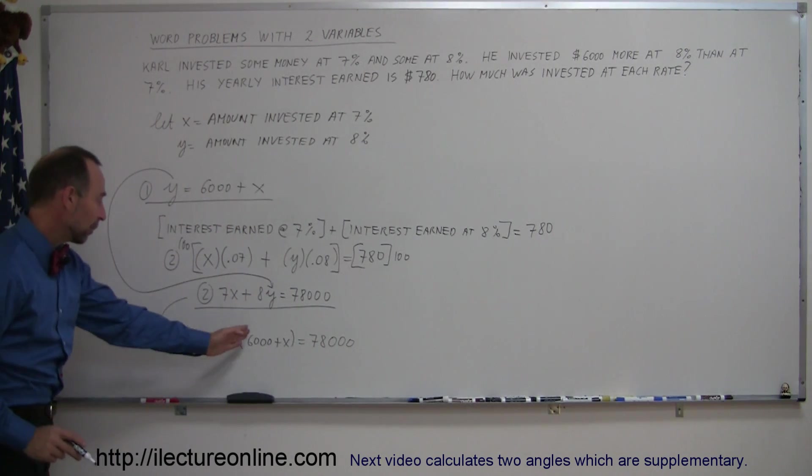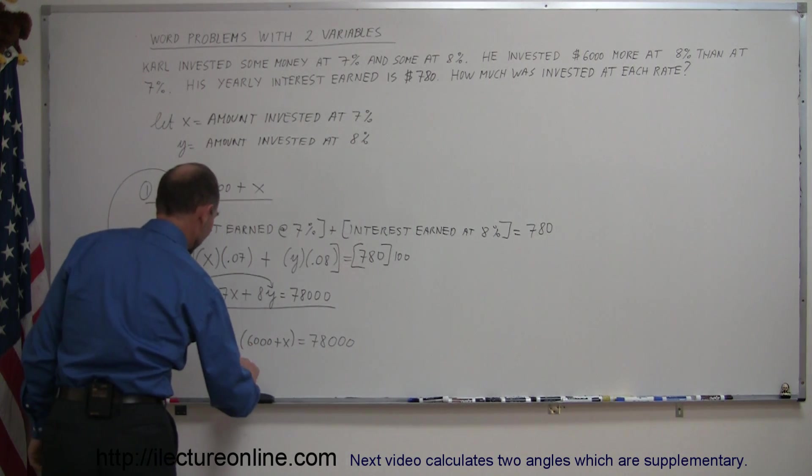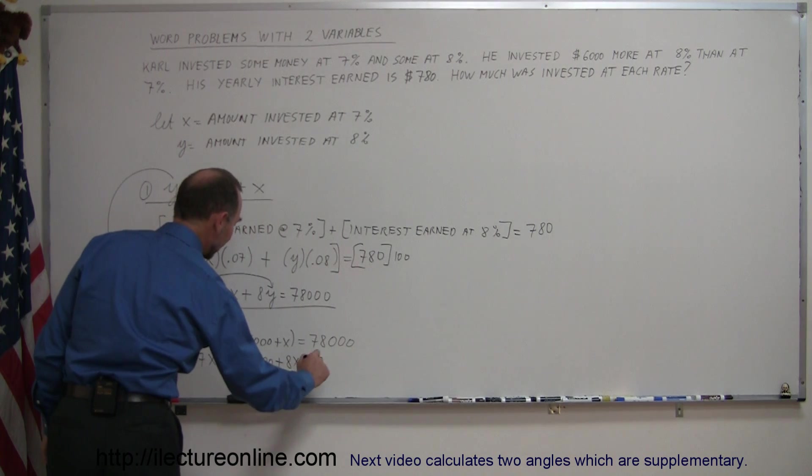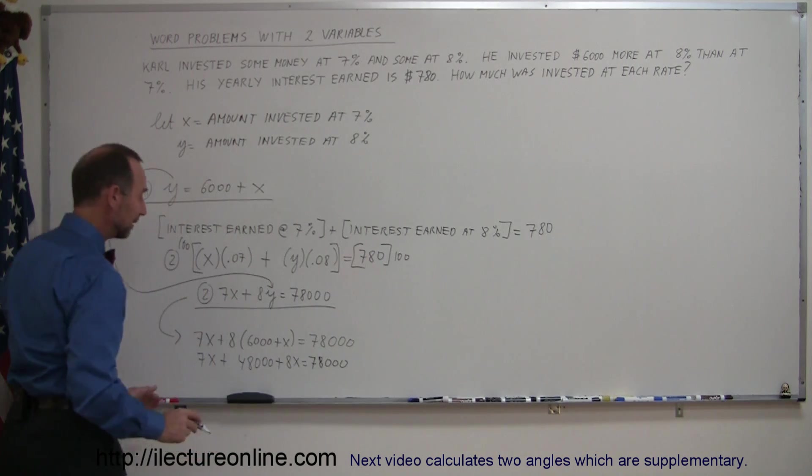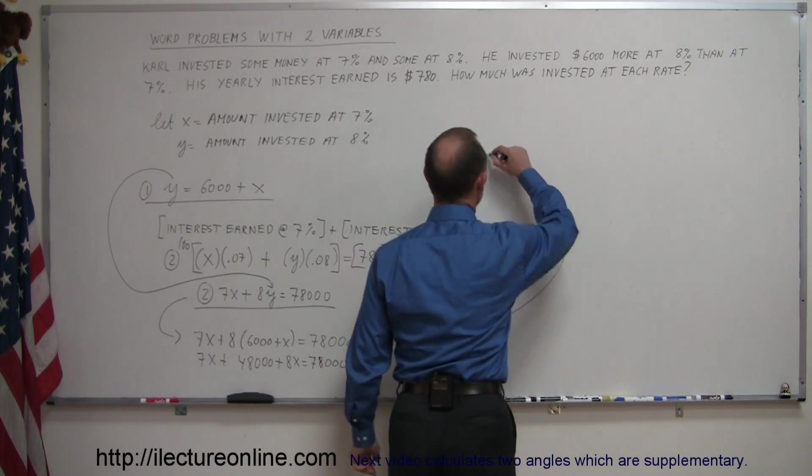Now I get rid of the parentheses by multiplying this through, so we have 7x plus 8 times 6,000 is 48,000, plus 8x equals 78,000. I need to move to the other side of the board because I'm running out of room here.